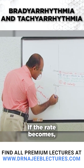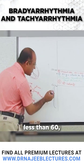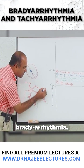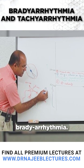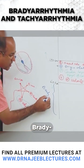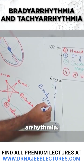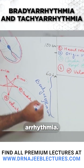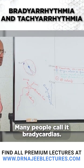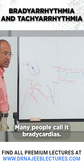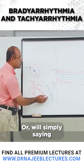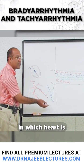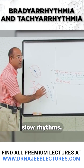If the heart rate becomes less than 60, the conditions are called bradyarrhythmias. Many people call them bradycardias, or we simply say these are arrhythmias in which the heart is having slow rhythms.